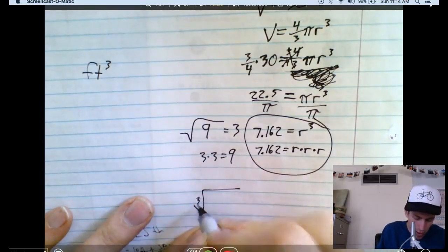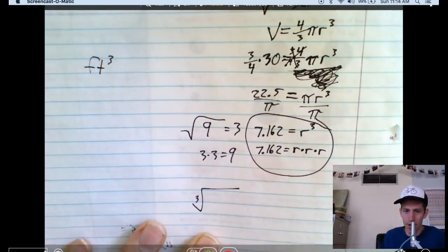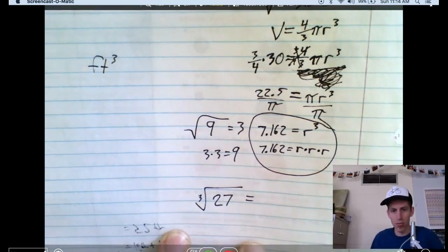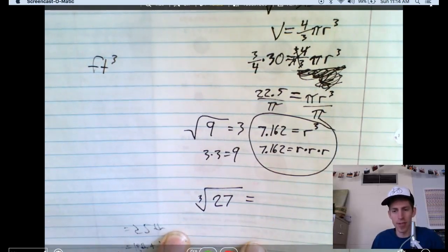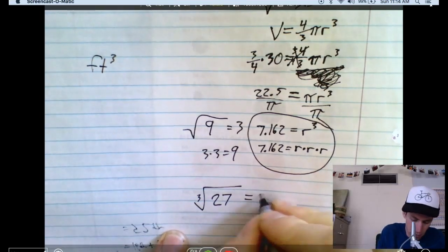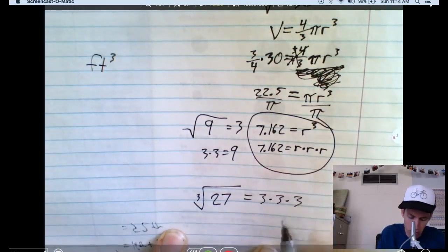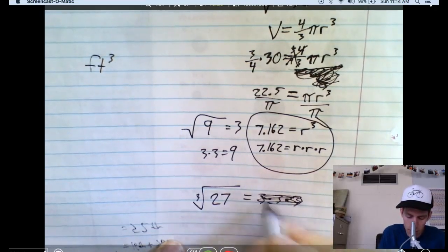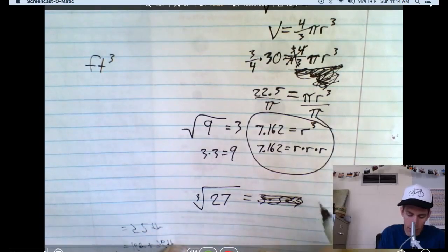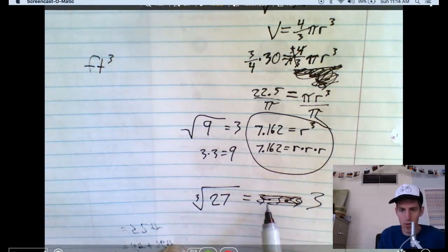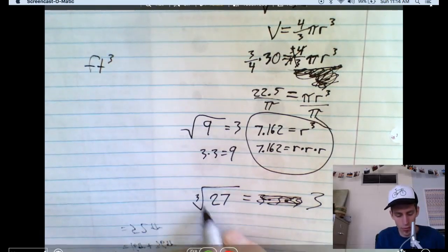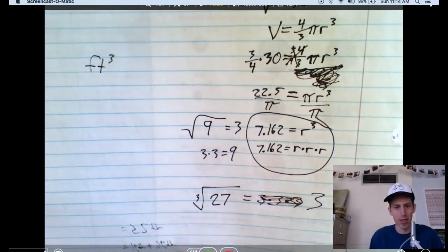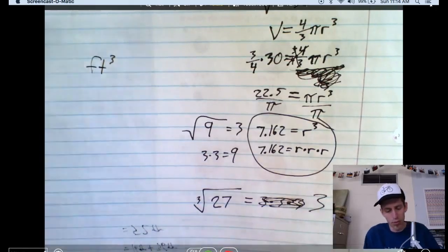What is the cubed root of 27? This is kind of one that I just remember. What times itself, times itself, gives you 27. Three times three, times three does. Three times three is nine. Times three is 27. So the cubed root of 27 equals three. I shouldn't have written that there, right? Because the cubed root of 27 isn't three times three times three. The cubed root of 27 is three. But what is the cubed root of 7.162?